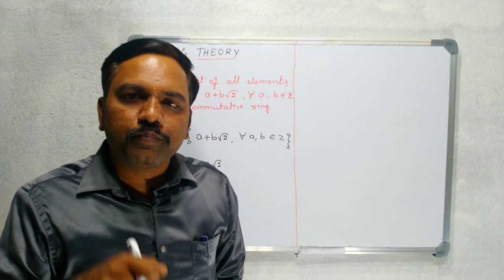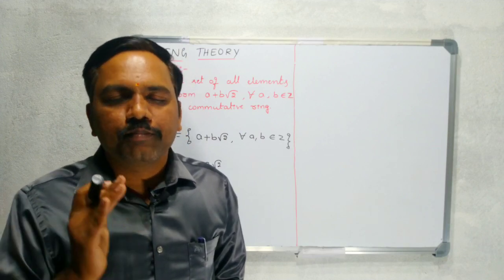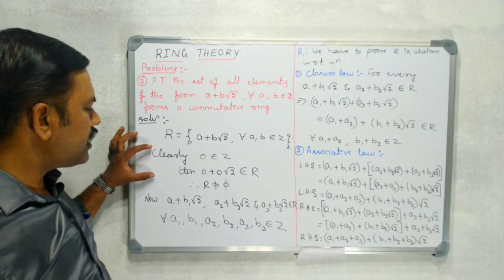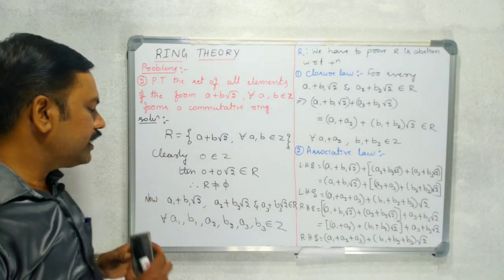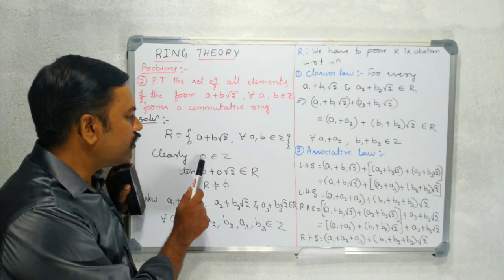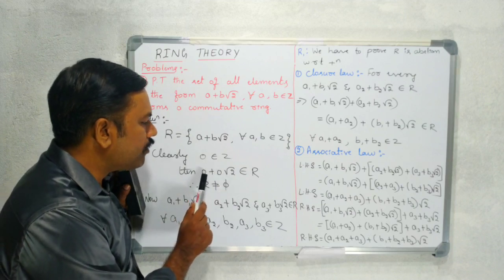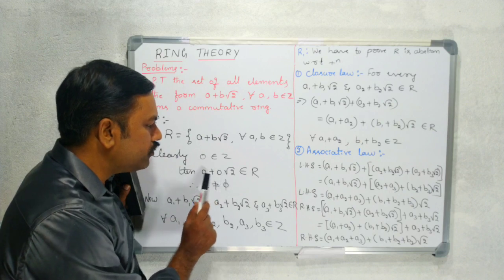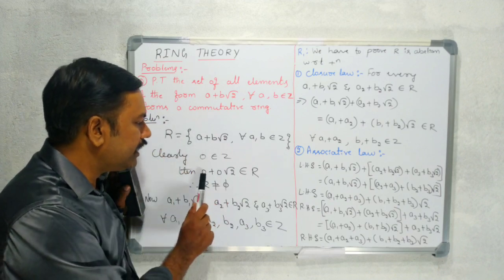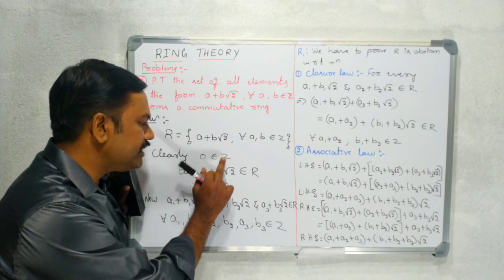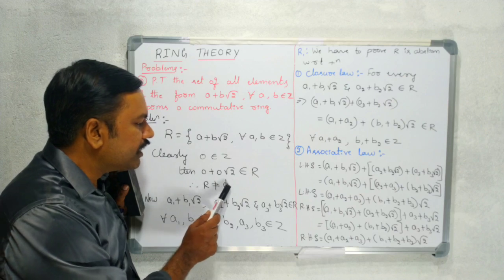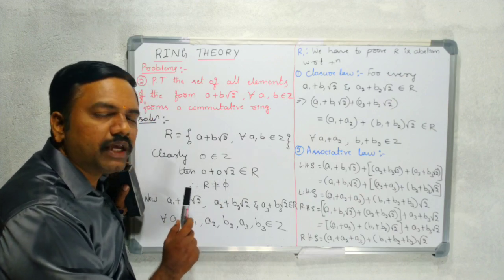Here we have to prove the given set is non-empty. Clearly, 0 is an integer, so 0 can be written as 0 plus 0 root 2, which is in the form A plus B root 2. That's why 0 belongs to R, so R is non-empty.